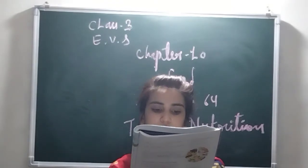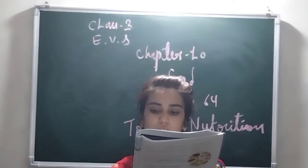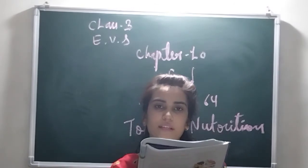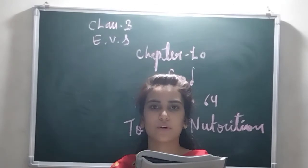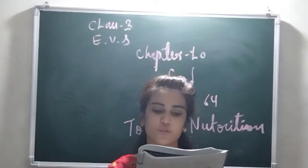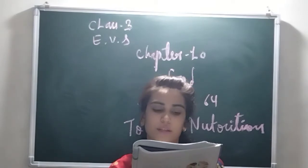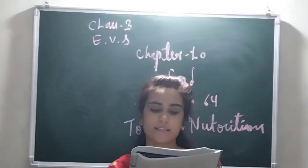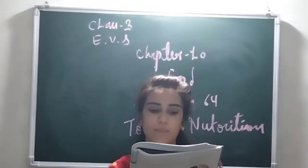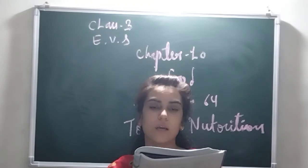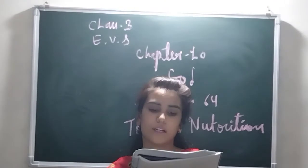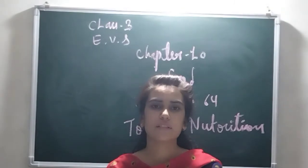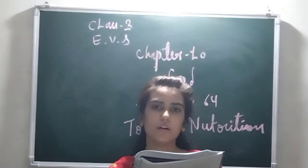Nutrients in food help our body develop in a balanced way. Nutrients are of various types: proteins, carbohydrates, fats, minerals, and vitamins. Carbohydrates and fats give us energy. Proteins are important for the development and growth of our body muscles. Vitamins and minerals help us to stay healthy and free from disease.